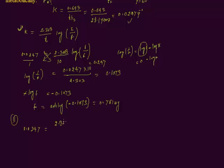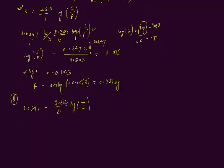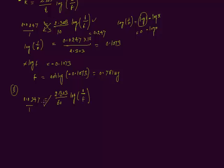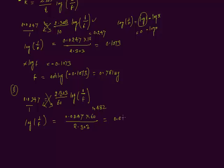Plugging in: 0.0247 = 2.303 divided by 60, times log(1/f). Cross-multiplying: log(1/f) = 0.0247 × 60 divided by 2.303. Multiplying 0.0247 by 60 gives 1.482, and dividing 1.482 by 2.303 gives 0.6435.